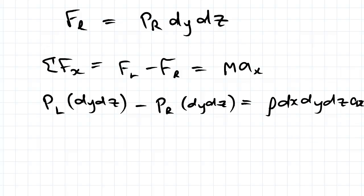So we know that those cancel, dy dz cancel from each side, and we're left with pL minus pR equals rho dx ax.